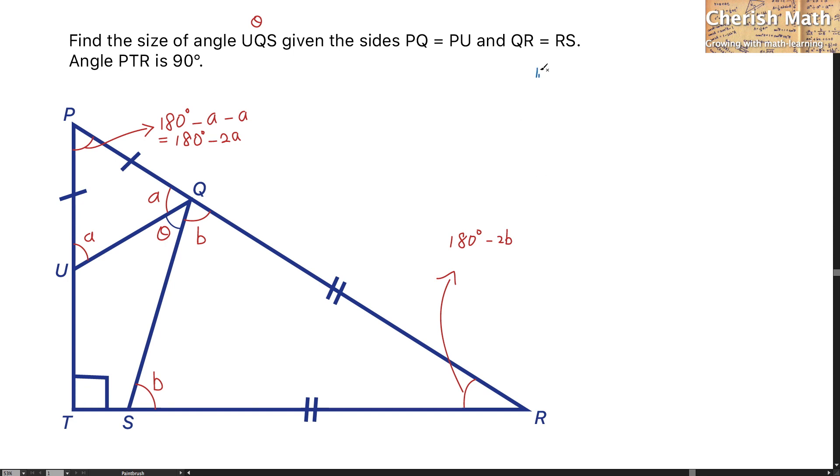By referring to line PQR, we know this is a straight line. For the value of A plus B plus theta, it is going to be 180 degrees. This serves as the first equation for our solution.